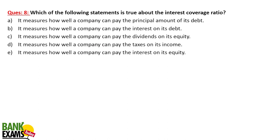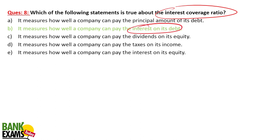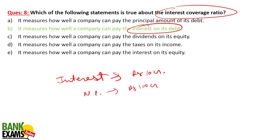Regarding the Interest Coverage Ratio: it measures how well a company can pay the interest on its debt. For example, if a company's annual interest expense is 10 crore and its net profit is 100 crore, the interest coverage ratio is 10. The higher the interest coverage ratio, the more solvent the company is and the better its financial position.